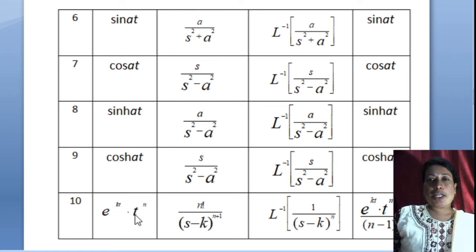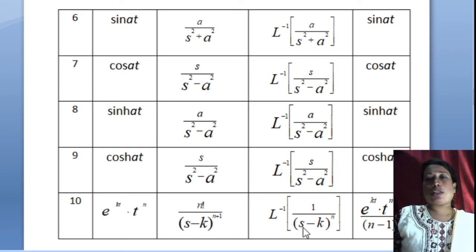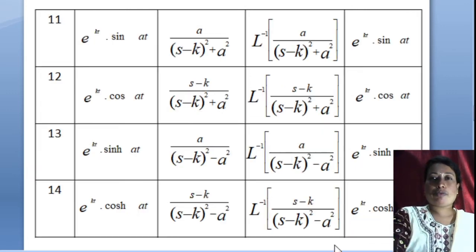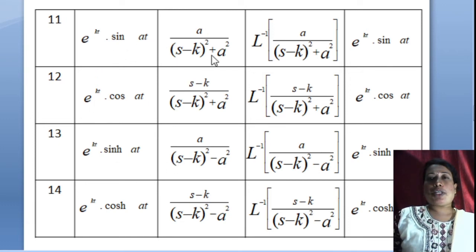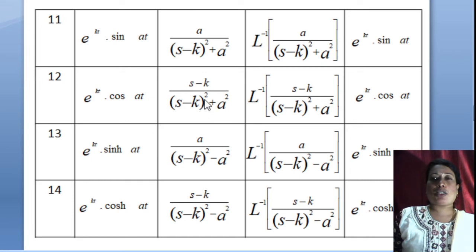L{e^(kt)·tⁿ} = n!/(s−k)^(n+1), so L⁻¹{1/(s−k)^n} = e^(kt)·t^(n−1)/(n−1)!. Also, L⁻¹{a/((s−k)²+a²)} = e^(kt)·sin(at), and L⁻¹{(s−k)/((s−k)²+a²)} = e^(kt)·cos(at).